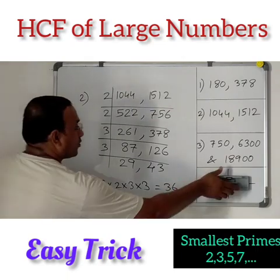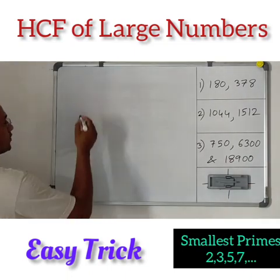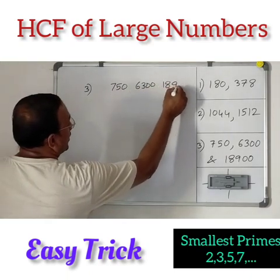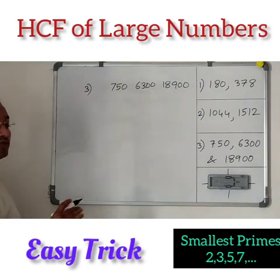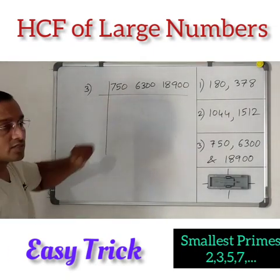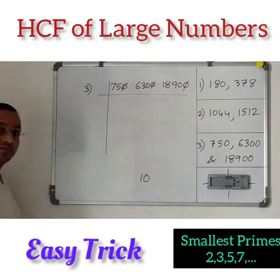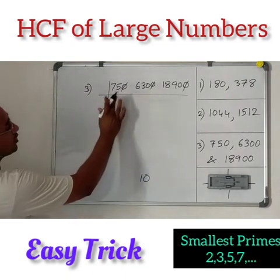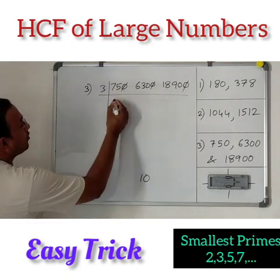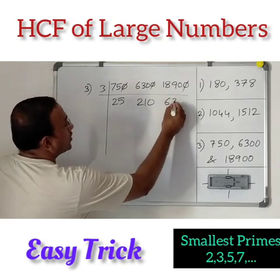Let's go to the last one. The third example has three numbers: 750, 6300, and 18900. These are multiples of 10, so let's cancel the common zeros. I write 10 first to account for that. Now dividing the reduced numbers by 3: 75 divided by 3 is 25, 630 divided by 3 is 210, and 1890 divided by 3 is 630.